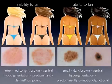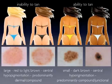On the other hand, in persons with a dark skin type, nevi are usually small, dark brown, show a central hypopigmentation, and are predominantly compound or junctional nevi.